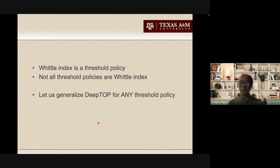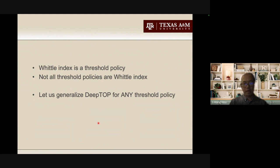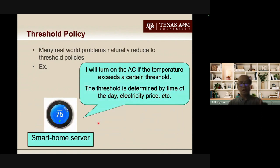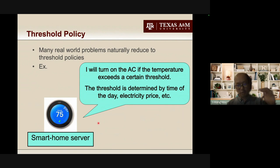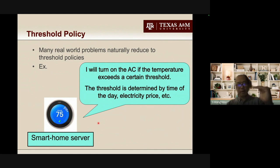Notice that Whittle index is a threshold policy, but not vice versa — not all threshold policies are Whittle index policies. There exist many other threshold policies that are not Whittle index. Can we try to generalize Deep-TOP to solve any threshold policy? I need to describe what I mean by threshold policy with examples. Consider a smart home server that decides whether to turn on the AC or not. It will set a threshold for temperature and turn on the AC if the temperature exceeds that threshold.